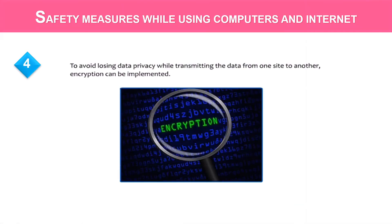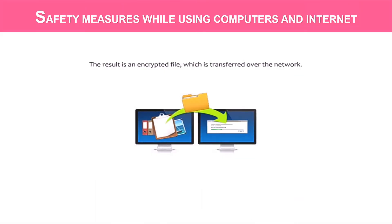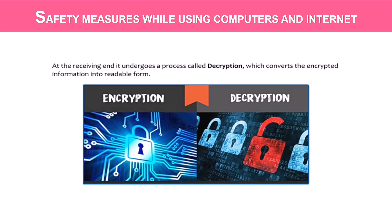Four, to avoid losing data privacy while transmitting data from one site to another, encryption can be implemented. Encryption is the process of transforming data into an unreadable code. The result is an encrypted file which is transferred over the network. At the receiving end, it undergoes a process called decryption, which converts the encrypted information back into readable code.